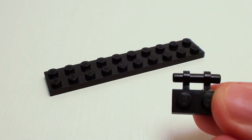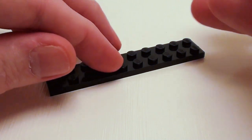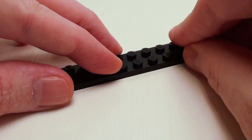Let's begin with a 2 by 10 plate for the chassis. Let's take a 1 by 2 modified plate with stick and place this on the far right.